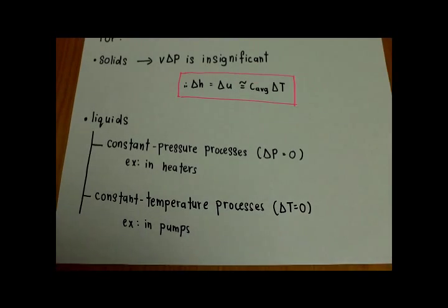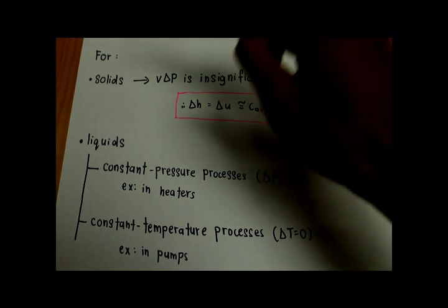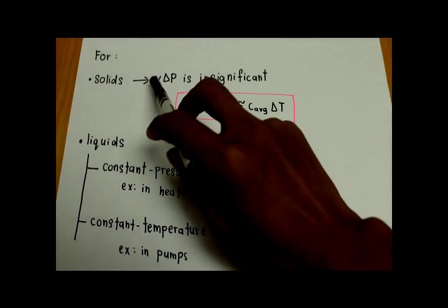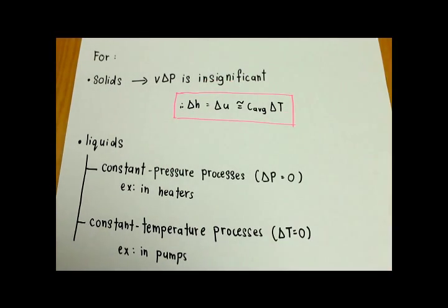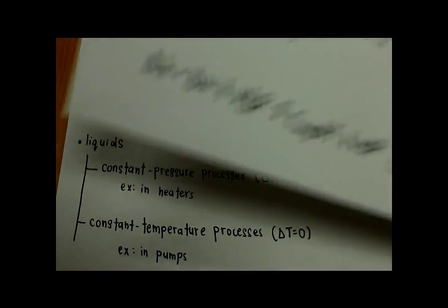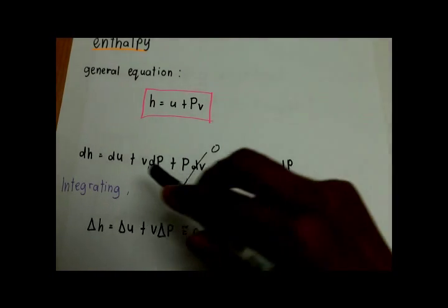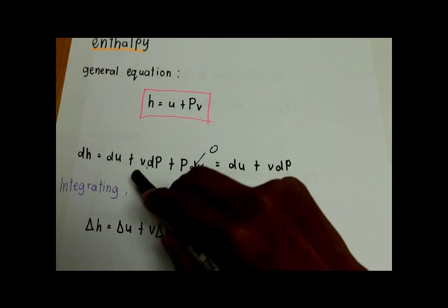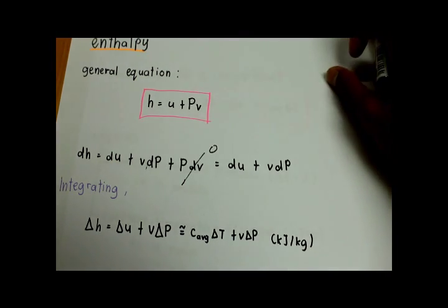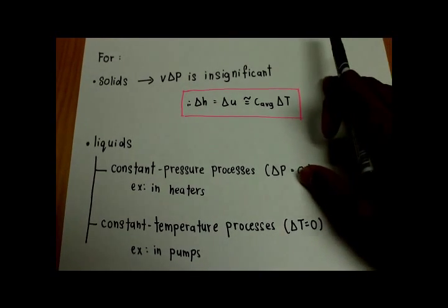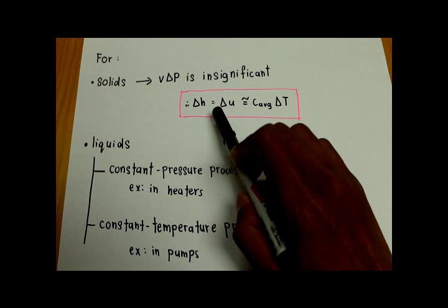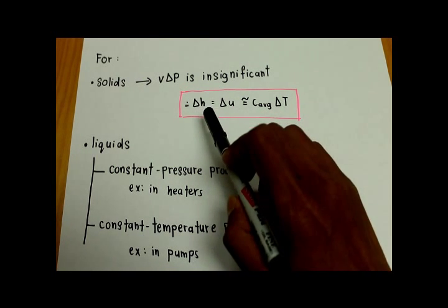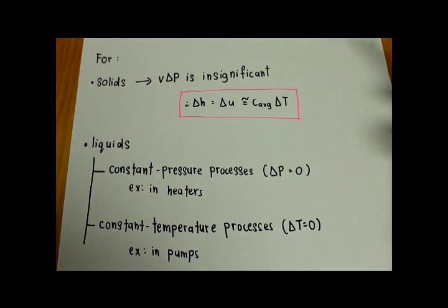Enthalpy has two parts. The first one is for solids. For solids, you have to know that v delta P is insignificant. Remembering the formula dh equal to du plus v dP, the v dP part is insignificant. Therefore, the final equation for solids is delta h equal to delta u. We can say that the change of enthalpy is equivalent to the change of internal energy.